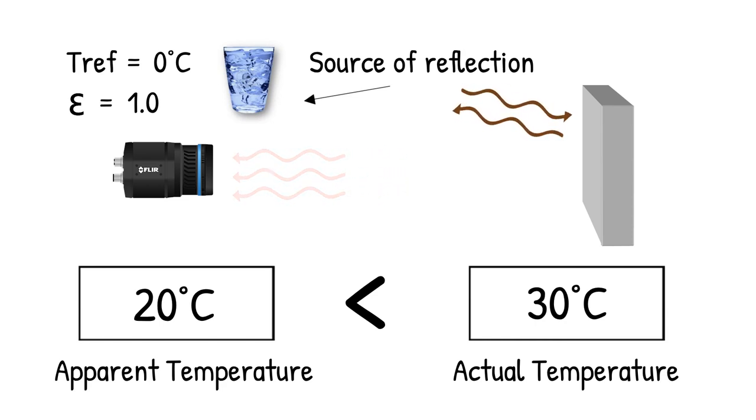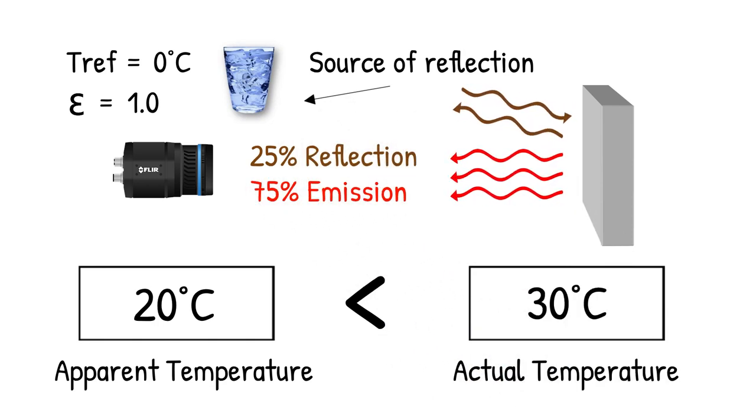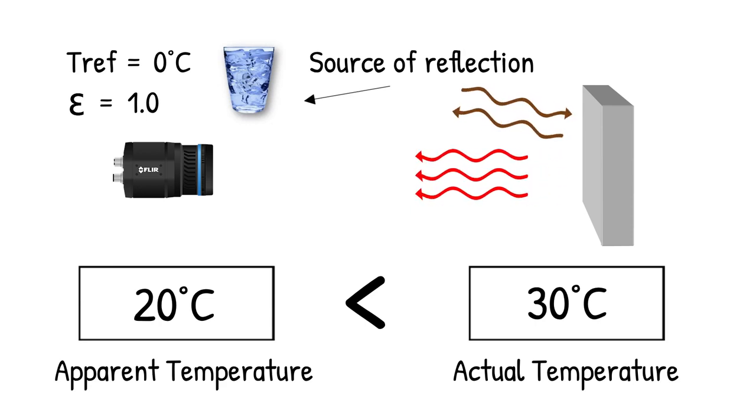Think of it like pouring 25 parts of 0 degrees C cold water into 75 parts of 30 degrees C water. Similar to the cold water diluting the warm water and reducing its temperature, the colder reflected radiation will dilute the warm radiation emitted from the target surface.